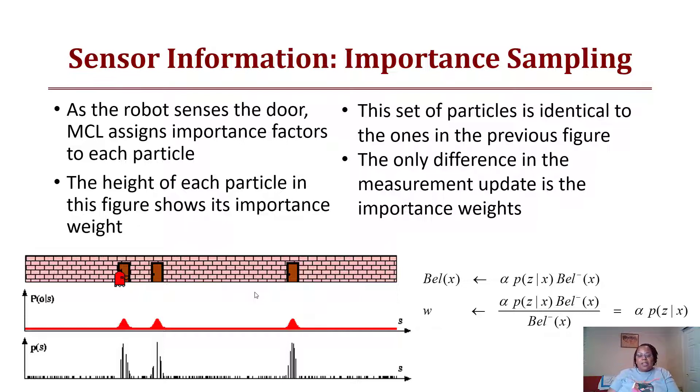The measurement update is based upon the importance of the weights. You have the belief in x where it's the normalization factor, the probability of z given x for the previous belief, and then that is weighted by the probability of z given x for the previous belief and the current belief, or it's alpha the weight times the probability of z given x.